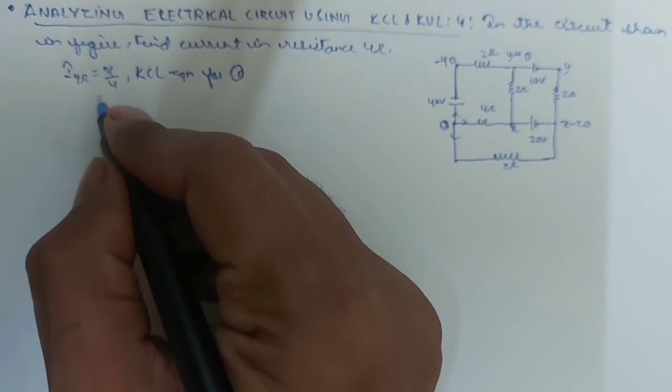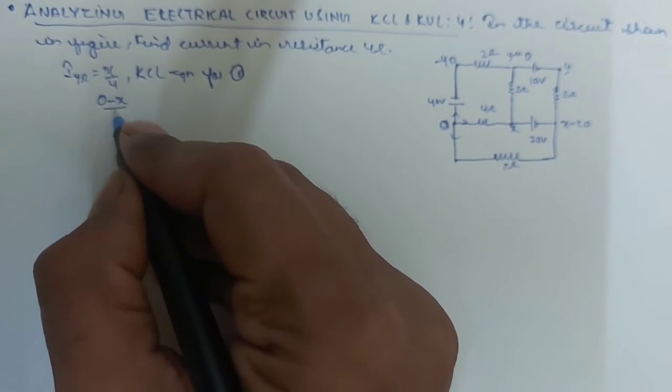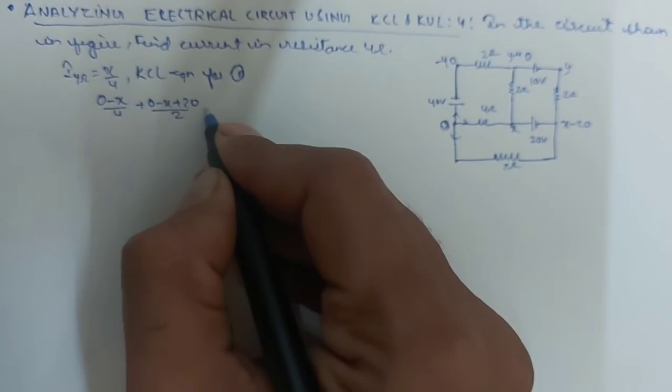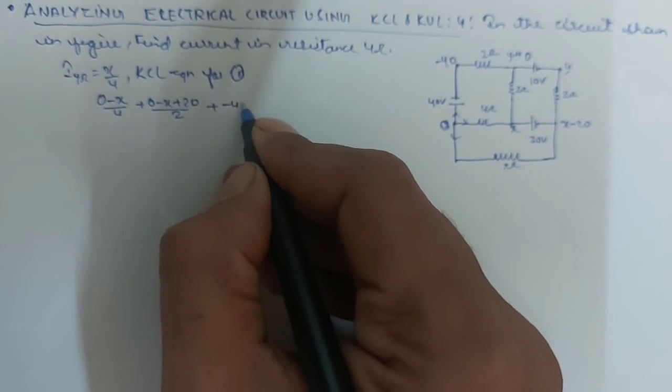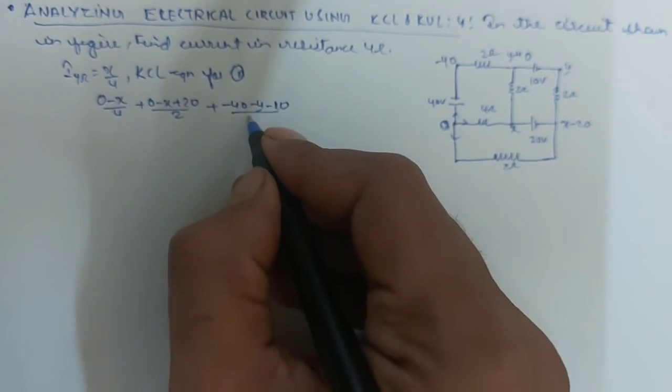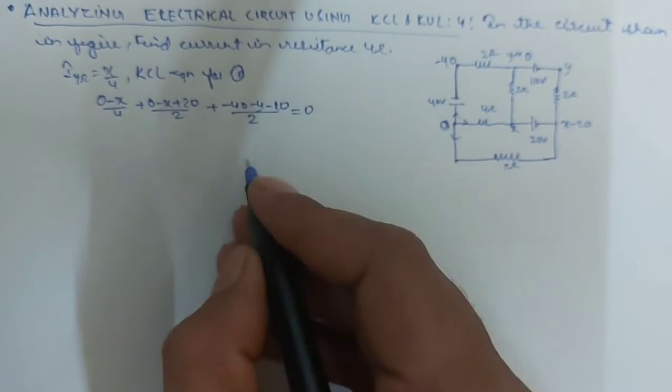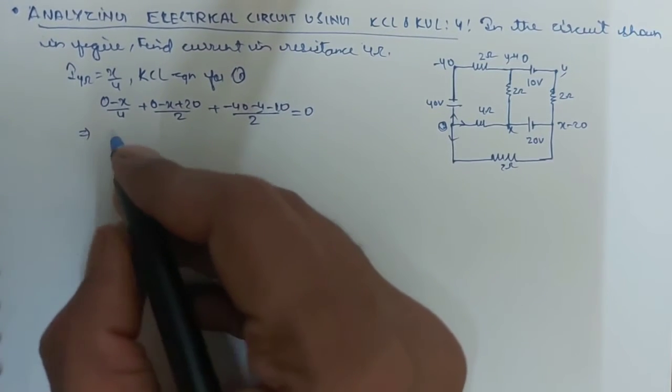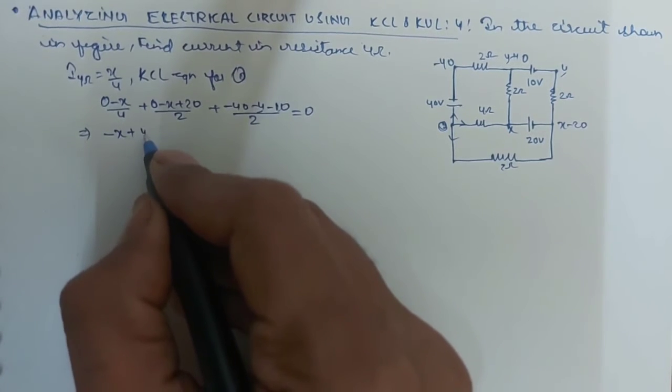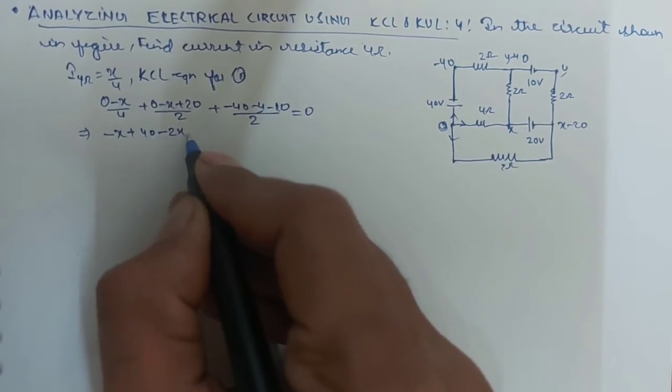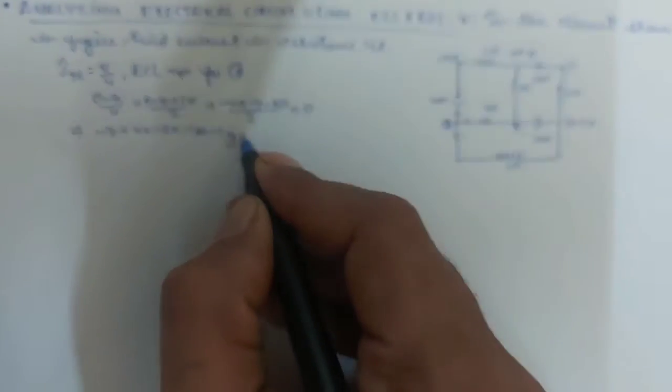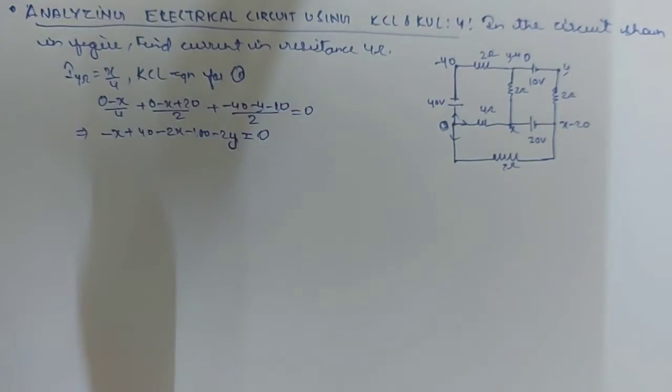So, for this, you can write 0 minus x upon 4 first. Second, 0 minus x plus 20 upon 2. Third, minus 40 minus y minus 10 upon again 2, that is equivalent to 0. On solving the equation, you will get around, I think,